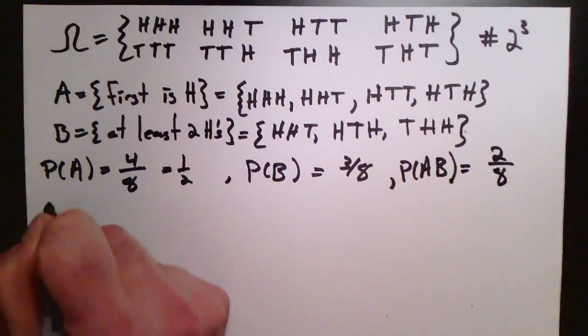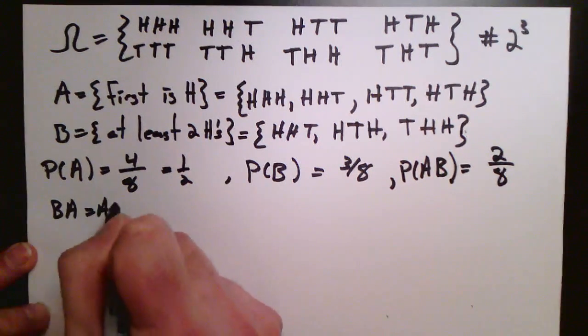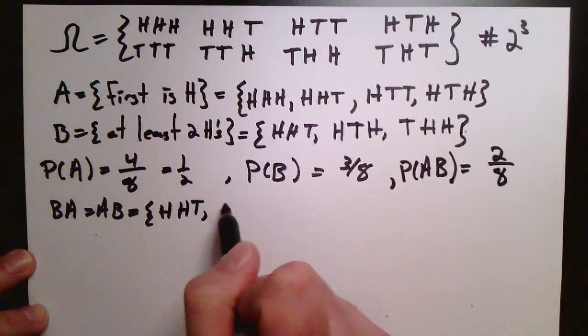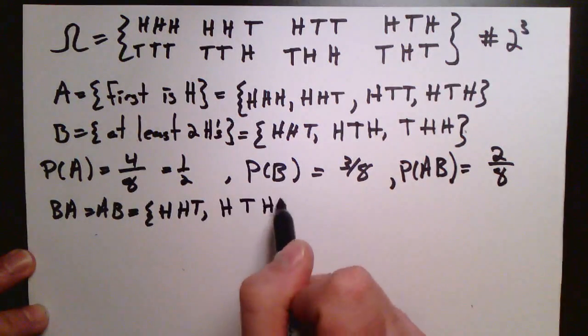And lastly, if we intersect A and B, there's only two elements in that. And because we see that A intersect B is the same as B intersect A, and that's just heads, head, tail, and heads, tail, head.